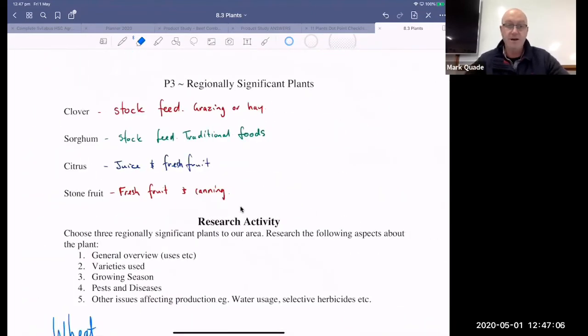Next page, clover, stock feed, grazing or hay. Sorghum, so it's a stock feed. So it goes into some traditional type foods. It's like millets. It's grown quite a bit in Africa. Sorghum is actually one of the biggest crops in Australia. A lot of ours goes into stock feed, though.